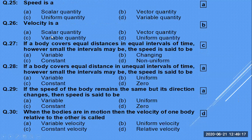Velocity is a vector quantity because it has direction. When we define velocity as the rate of change of displacement, displacement is itself a vector quantity — so velocity is also a vector.